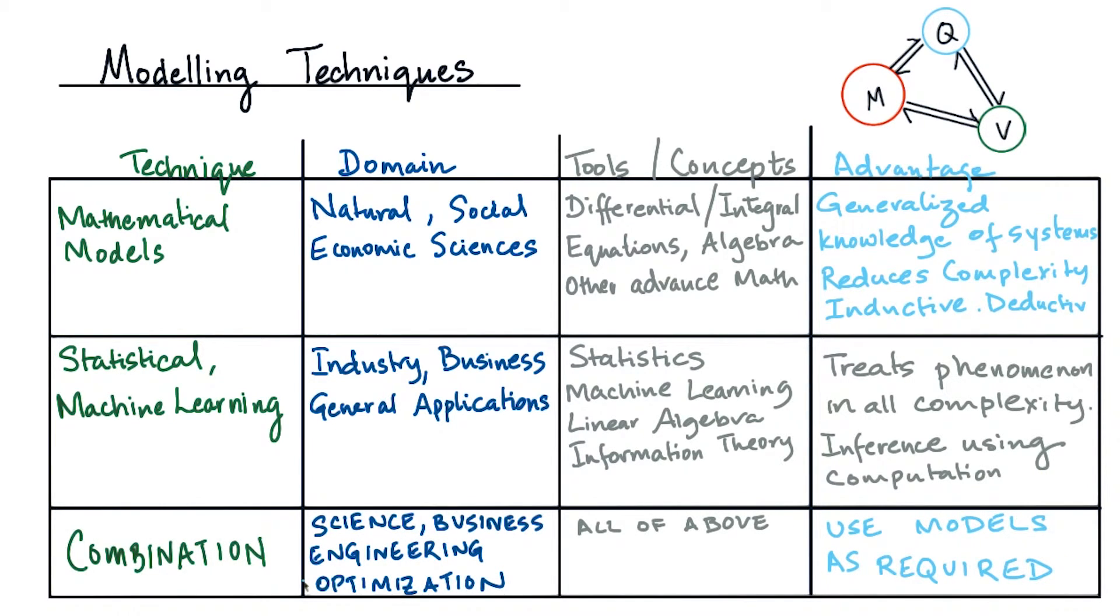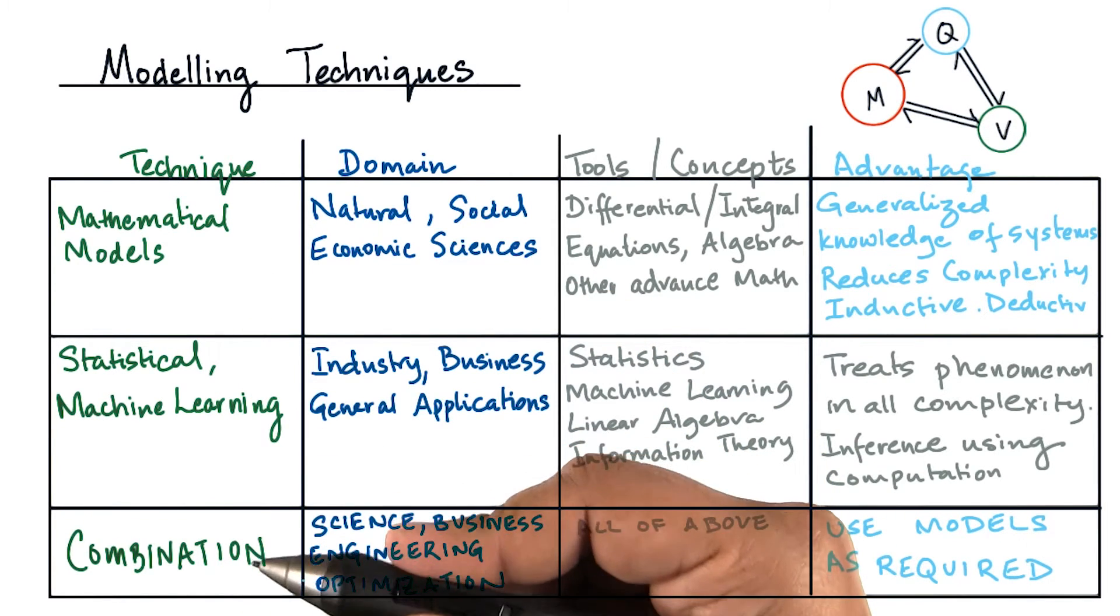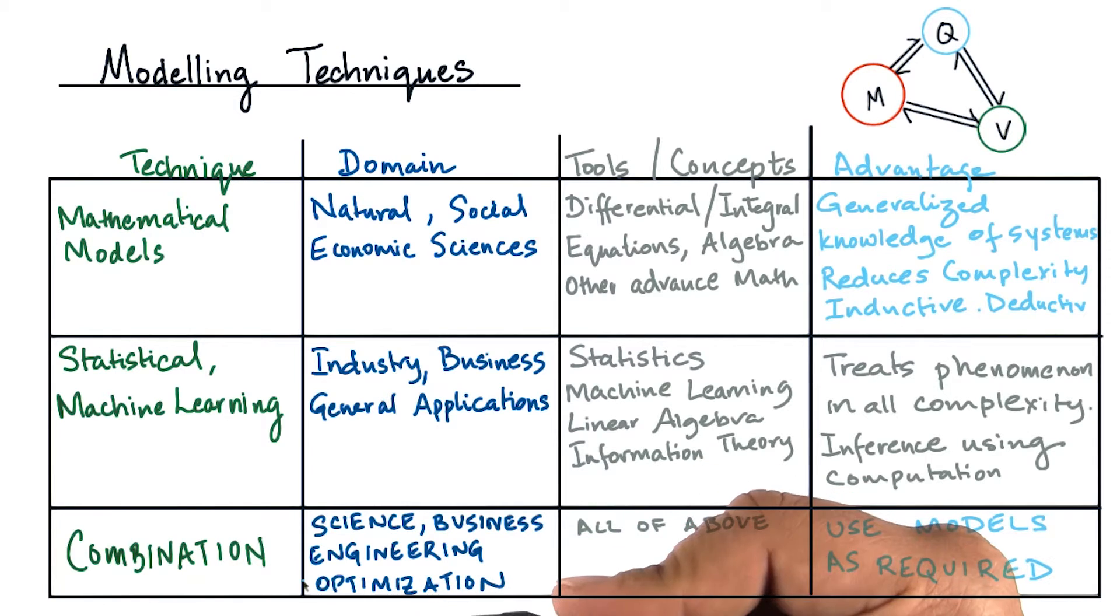In practice, we often use a combination of mathematical modeling techniques and statistical and machine learning techniques. These are applicable everywhere in science, as we mentioned social and economic sciences, business engineering, as well as optimization problems.